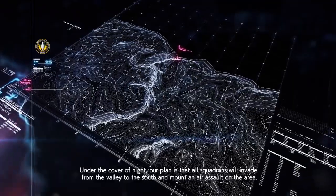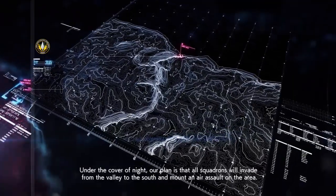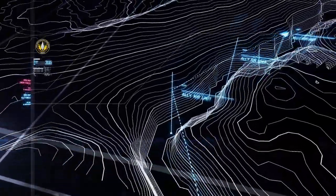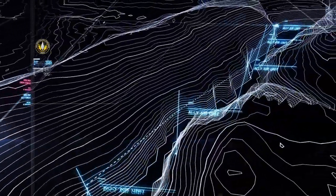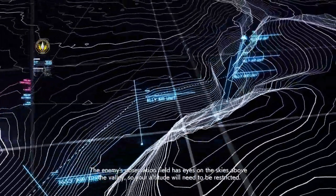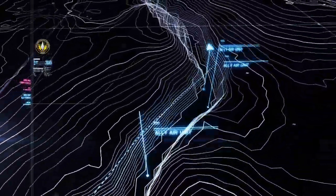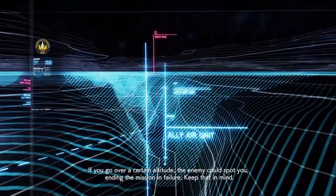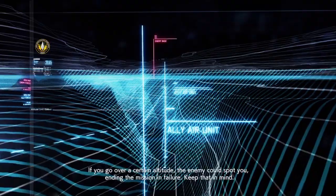Under the cover of night, our plan is that all squadrons will invade from the valley to the south and mount an air assault on the area. The enemy's observation field has eyes on the skies above the valley, so your altitude will need to be restricted. If you go over a certain altitude, the enemy could spot you, ending the mission in failure. Keep that in mind.